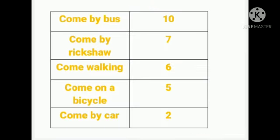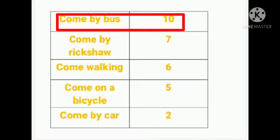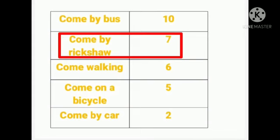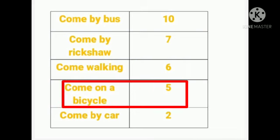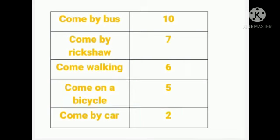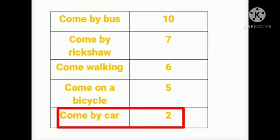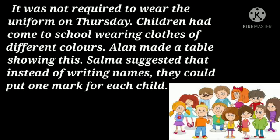After seeing the table we come to know that 10 students come by bus, 7 students come by rickshaw, 6 students come walking, 5 students come on a bicycle, and 2 students come by car.